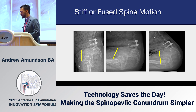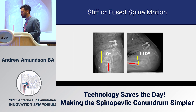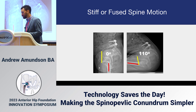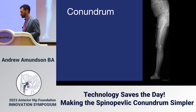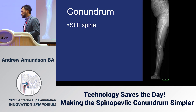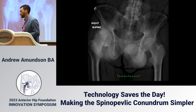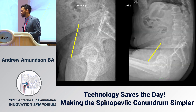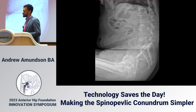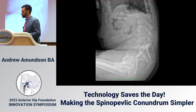This patient had to rotate forward 110 degrees through the hip to sit forward. Here's the spinal pelvic conundrum: this patient has a stiff spine, negative pelvic tilt, and hip flexion contracture. You can see there's not much happening as the patient bends forward.